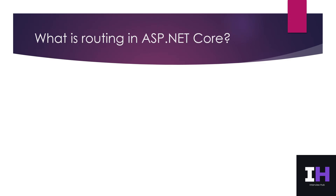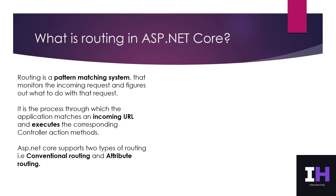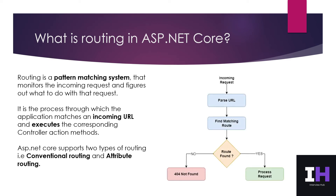Q9. What is routing in ASP.NET Core? Routing is a pattern-matching system that monitors the incoming request and figures out what to do with that request. It is the process through which the application matches an incoming URL and executes the corresponding controller action methods. ASP.NET Core supports two types of routing: Conventional Routing and Attribute Routing. A routing flow diagram is shown here.